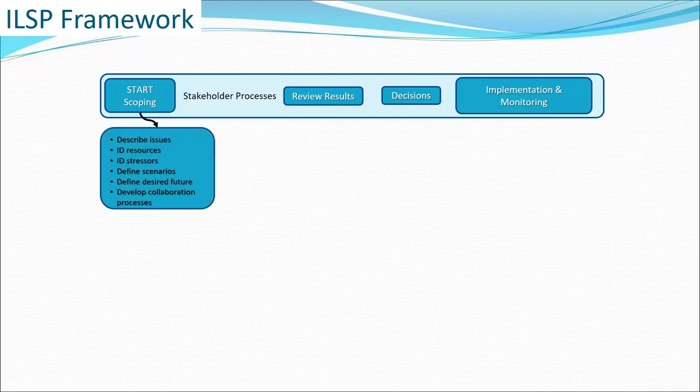We studied a lot of different frameworks and pulled together this one. I'm going to step through it in some detail — it's a bit complex, but so is cross-realm planning. This bar across the top represents the stakeholder processes involved. We begin at the left with scoping, which entails all the usual activities of identifying your resources and stressors and defining desired future conditions.